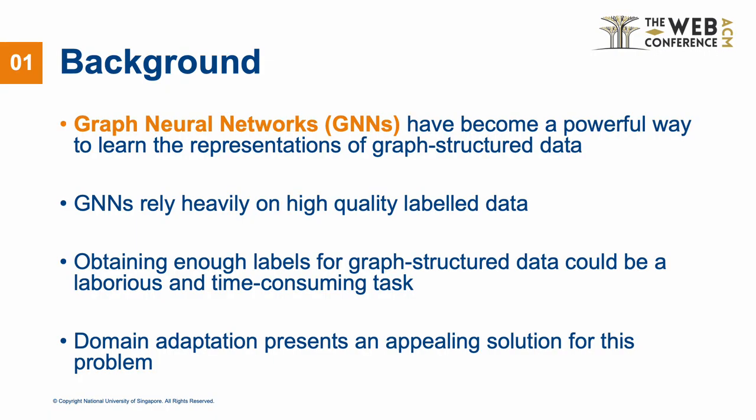Graph neural networks (GNNs) have become a powerful way to learn the representations of graph-structured data. Despite their success, GNNs rely heavily on high-quality labeled data. Unfortunately, obtaining enough labels for graph-structured data could be a laborious and time-consuming task. To alleviate the burden of laborious data annotations, domain adaptation presents an appealing solution for this problem.